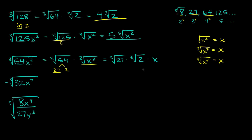So to simplify: the cube root of 27 is equal to 3 — that's a perfect cube. So this is equal to 3 times the cube root of 2 times x. Those are all as simplified as we can get them, so that would be your final answer.